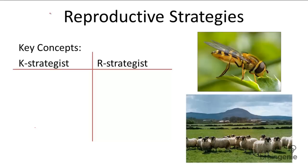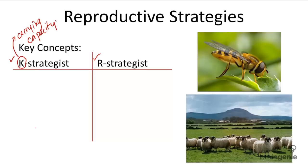Reproductively, organisms can be categorized into two groups: K-strategists and R-strategists. K-strategists maximize their populations near carrying capacity — this is easy to remember because K stands for carrying capacity. R-strategists maximize their population rate of growth, so R stands for rate of growth. An example of a K-strategist would be the mammal, and an example of an R-strategist would be the insect.